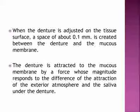When the denture is seated on the tissue surface, a space of about 0.1 millimeter is created between the denture and the mucous membrane. The denture is attracted to the mucous membrane by a force whose magnitude responds to the difference between the exterior atmospheric attraction and the saliva under the denture. A very thin layer of saliva between the tissues and the denture is needed to achieve this.